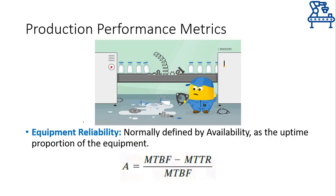A metric for equipment reliability that is normally used is called availability — that is, the time for which the equipment is actually available for processing. Ideally, the availability should be one, but if a machine breaks down, it will require some time to get repaired, and that time is lost, which makes the availability fall. Mathematically, availability is defined as the ratio of the difference between the mean time before failure and the mean time to repair, divided by the mean time before failure. For example, if a machine breaks down after averagely 100 days and it takes five days to repair, then availability would be (100 - 5) / 100 = 0.95, or 95%.